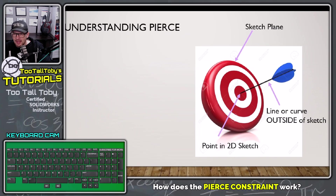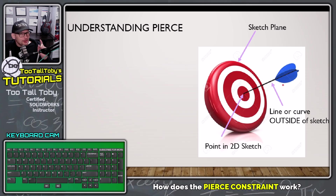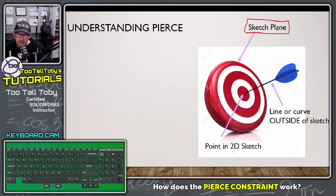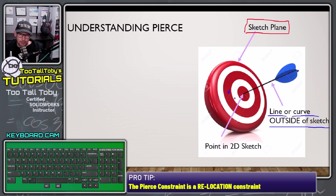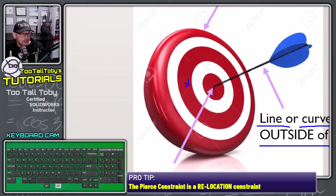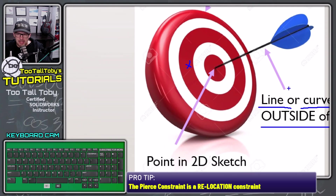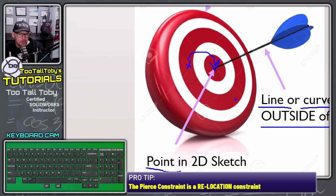What we've got here is an arrow running into a target, or piercing the face of a target. The target itself is acting as our 2D sketch plane — a nice planar surface. On that target, there's going to be a 2D point, and passing through that target there's going to be a line or a curve outside of the current sketch. The pierce constraint is a relocation constraint: we take the point inside the 2D sketch and relocate it to where that line or curve is passing through the 2D sketch.